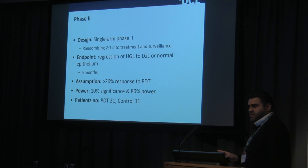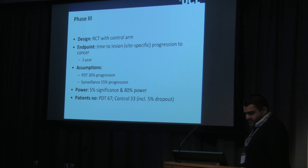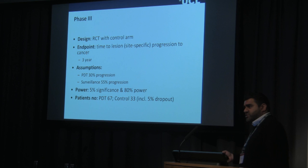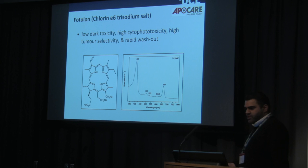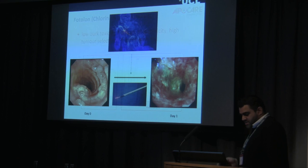Statistically, we are assuming a 20% response rate in the phase two trial. In phase three, we anticipate a 30% progression rate with PDT — consistent with what the VU Medical Centre in Amsterdam has published — and approximately 50% progression to cancer in the surveillance arm, based on our cohort data. We have moved from photofrin to photalon over the past five years because patients experience significantly less dark toxicity, it is taken up by tumors very selectively, washes out quickly, and we treat at 665 nanometers.